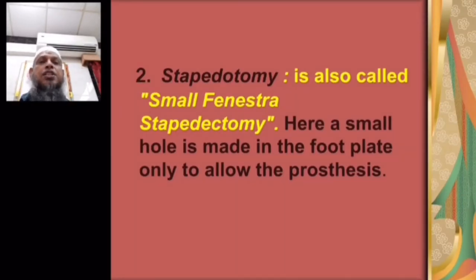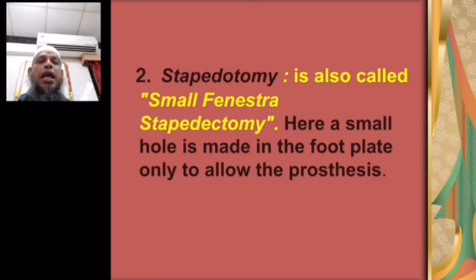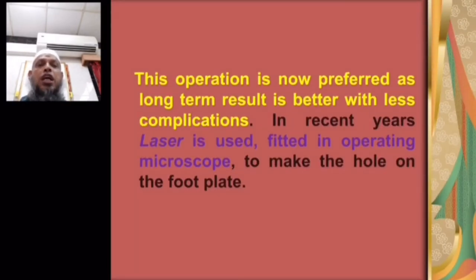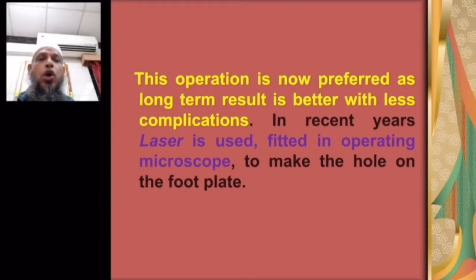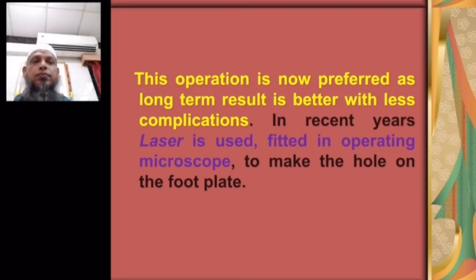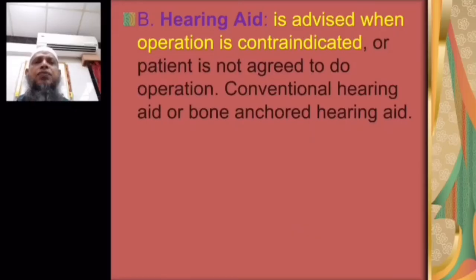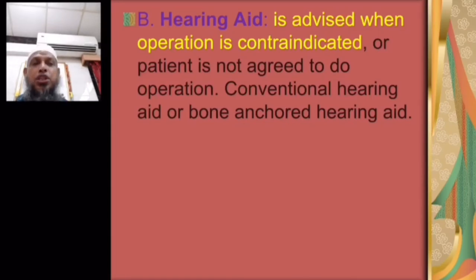Stapedotomy is called the small fenestra stapedotomy — the modern approach where a small hole is made in the footplate of the stapes, only large enough to allow the prosthesis. This operation is now preferred as long-term results are better with fewer complications. In recent years, laser fitted in the operating microscope is used to make the hole in the footplate.